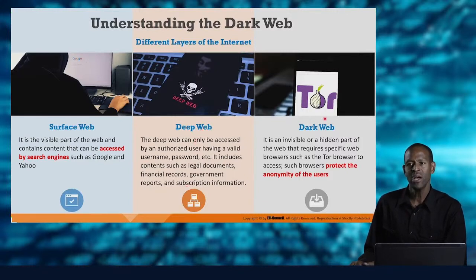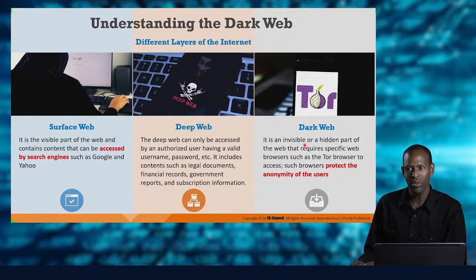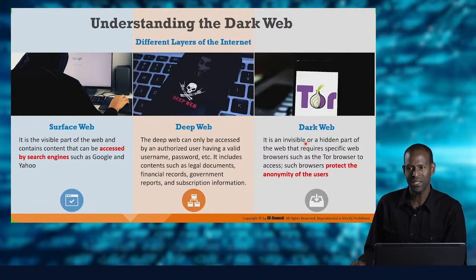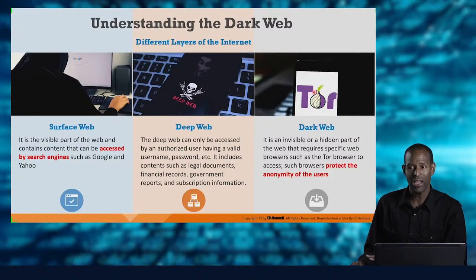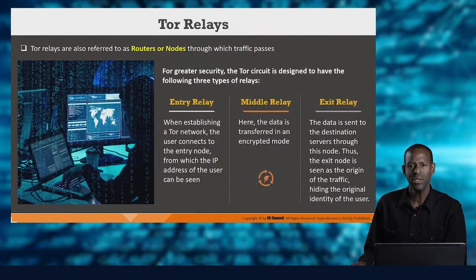Then we have the dark web, which is a smaller portion than the deep web. It's hidden, invisible, not searchable or crawlable under normal circumstances. It requires specific resources to access, and they are there to protect the anonymity of users. Browsers like Tor — and Tor is not the only one — can do this. There are many others, and some are growing and may eventually replace Tor as the primary browser.